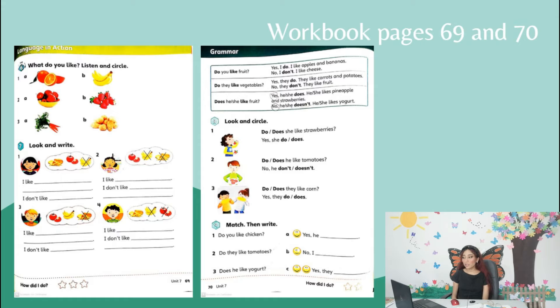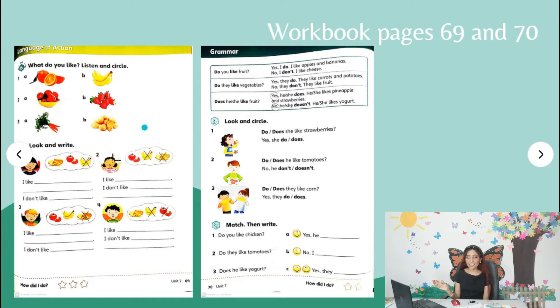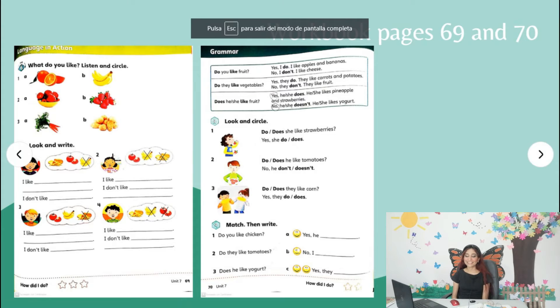Now we're going to go to today's activities. We have two pages from the workbook — pages 69 and 70. Activity 6: 'What do you like? Listen and circle.' Number one: A or B. Number two: A or B. Number three: A or B. Pay attention to the pictures before we listen. I'm going to play the audio now — let's pay attention.